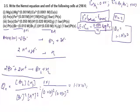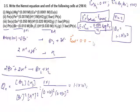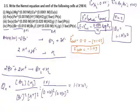Now calculate E°cell for part 4. At the cathode (H₂ electrode), E° = 0.0 V. At the anode, the bromine reduction potential is +1.09 V. E°cell = 0.0 − 1.09 = −1.09 V.